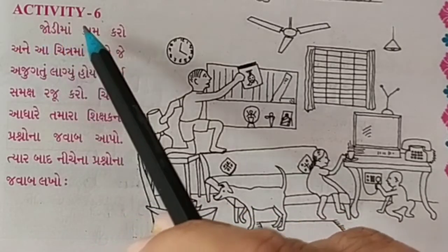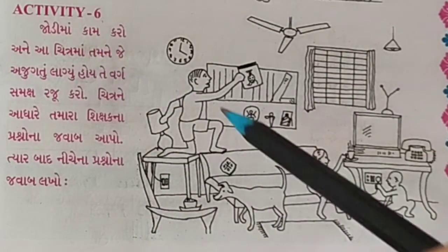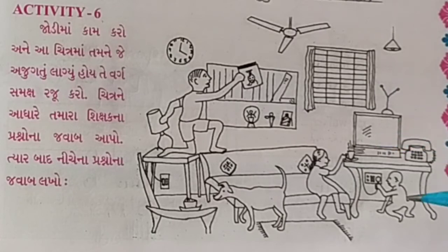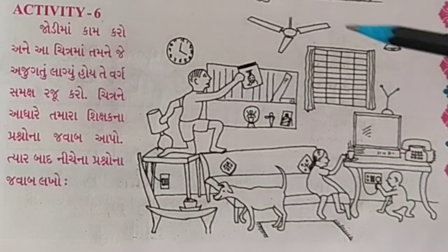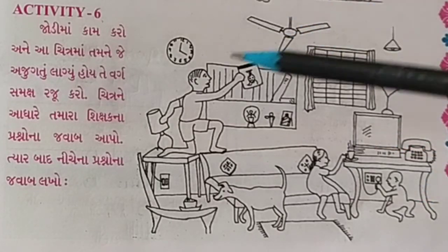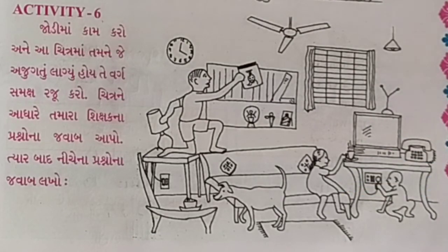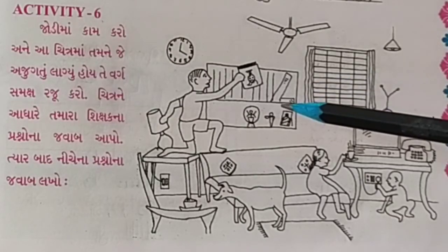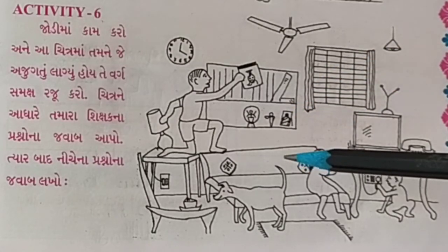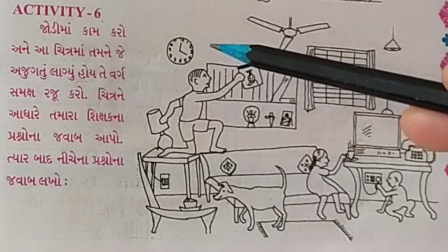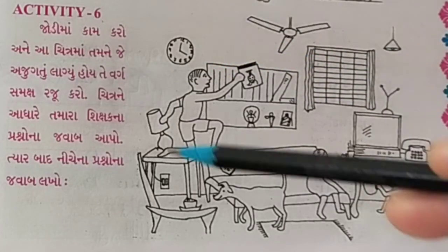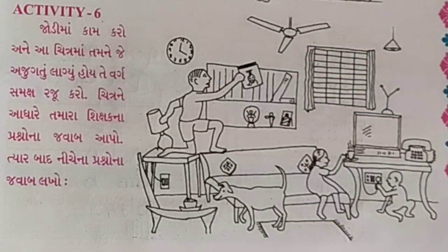Activity 6. Here is a picture. Look at it carefully. There is a fan, there is a boy, there is a girl, there is a child, there is a TV, there is a telephone, there is a bookshelf, there is a sofa, there is a clock. So many things are there.